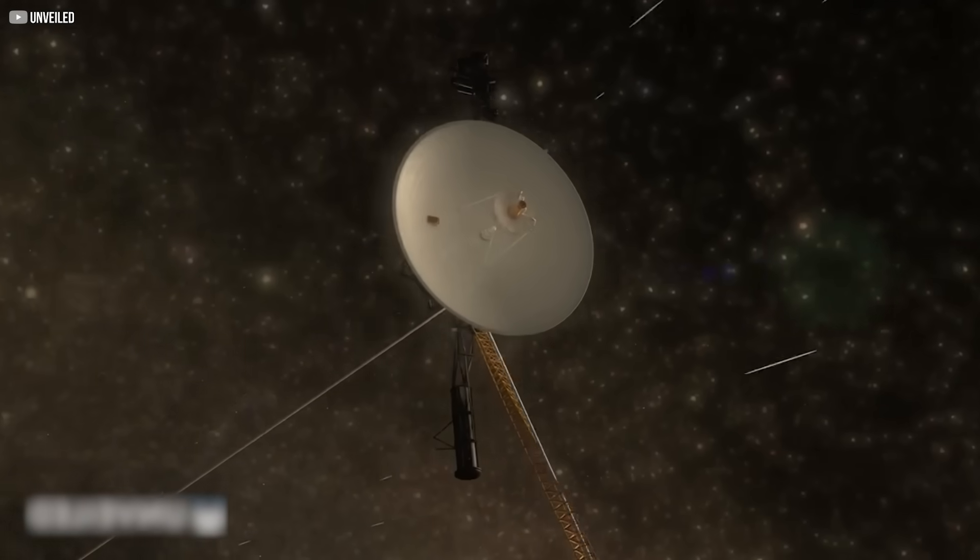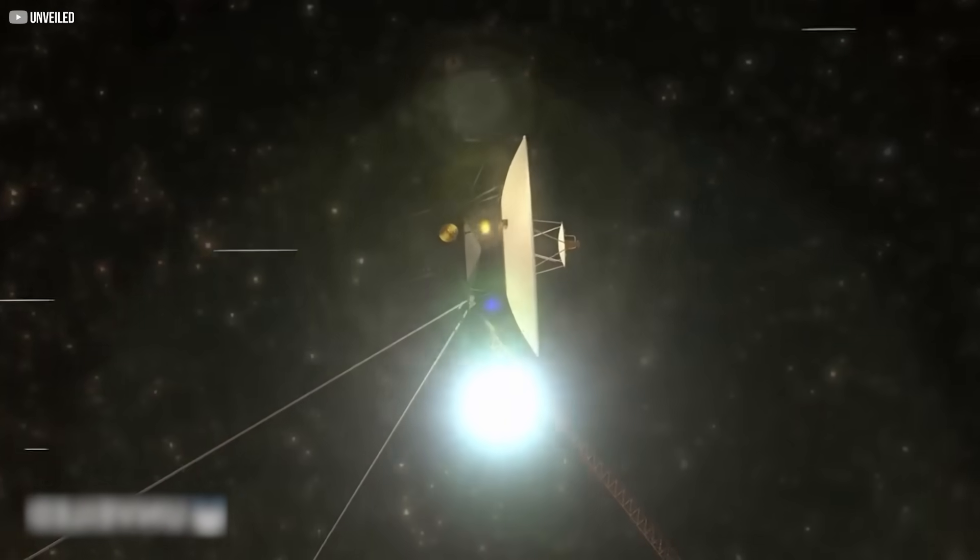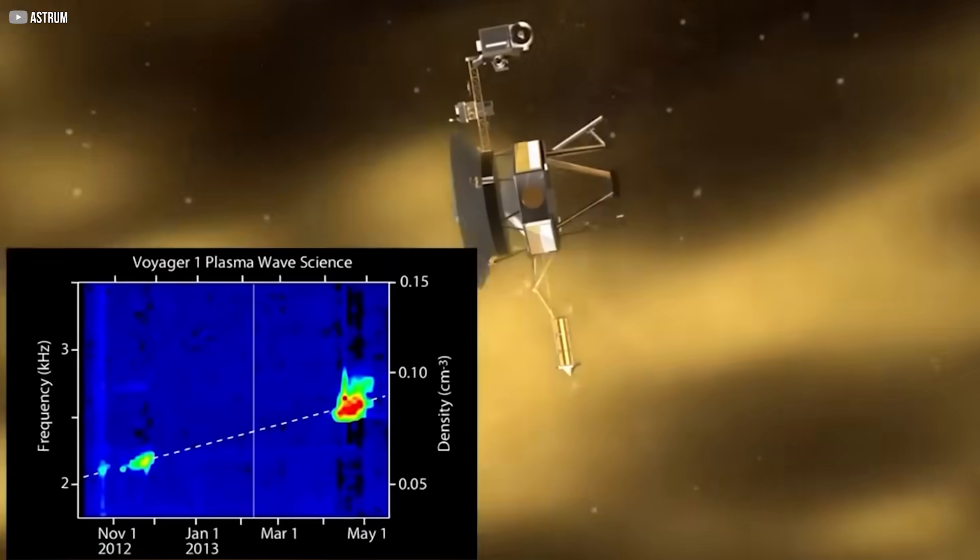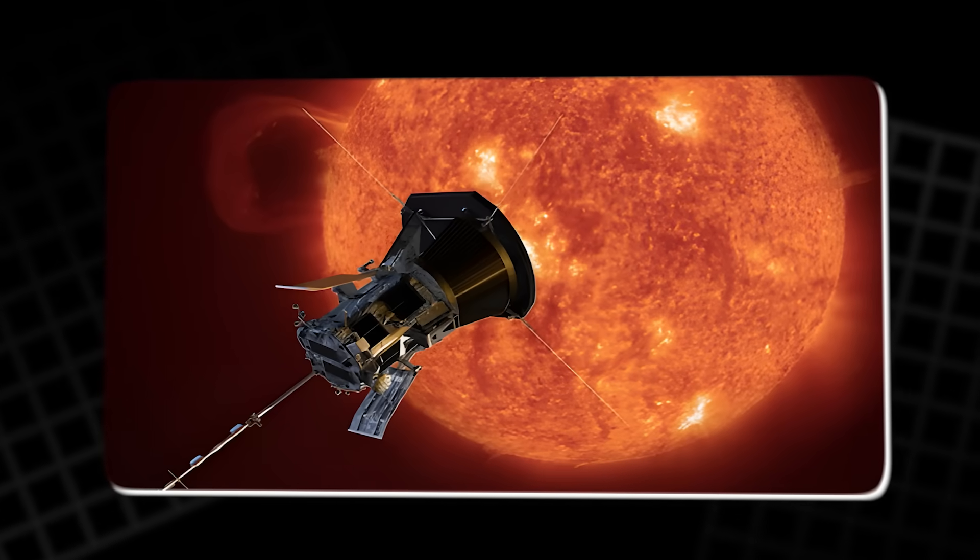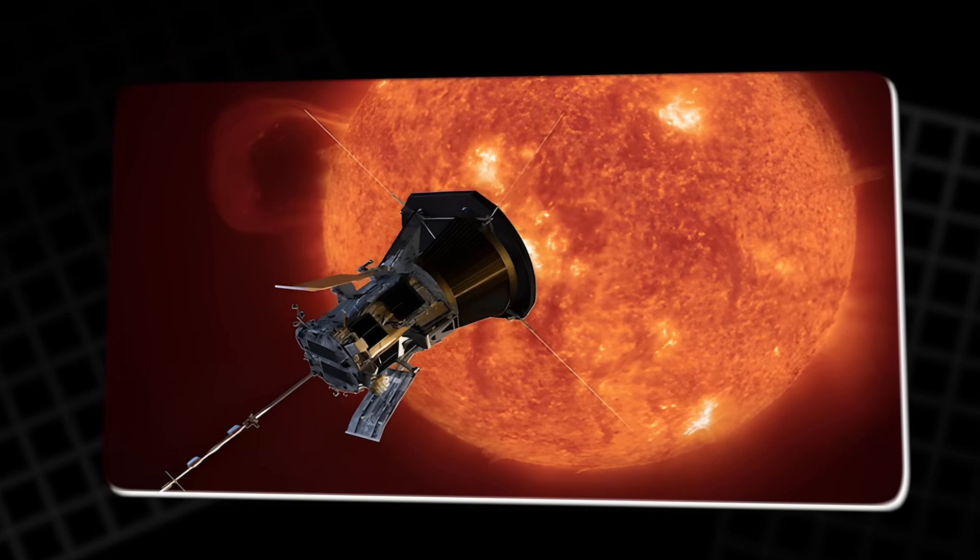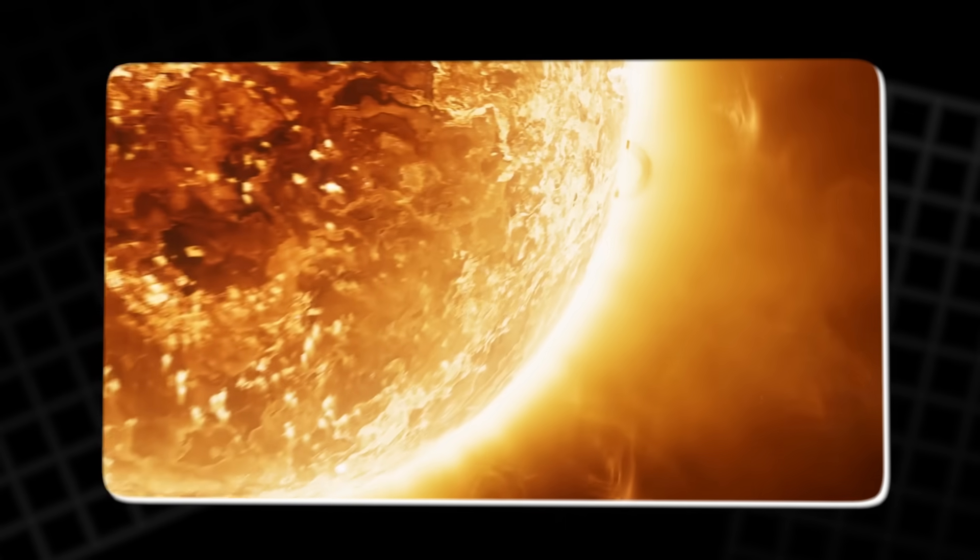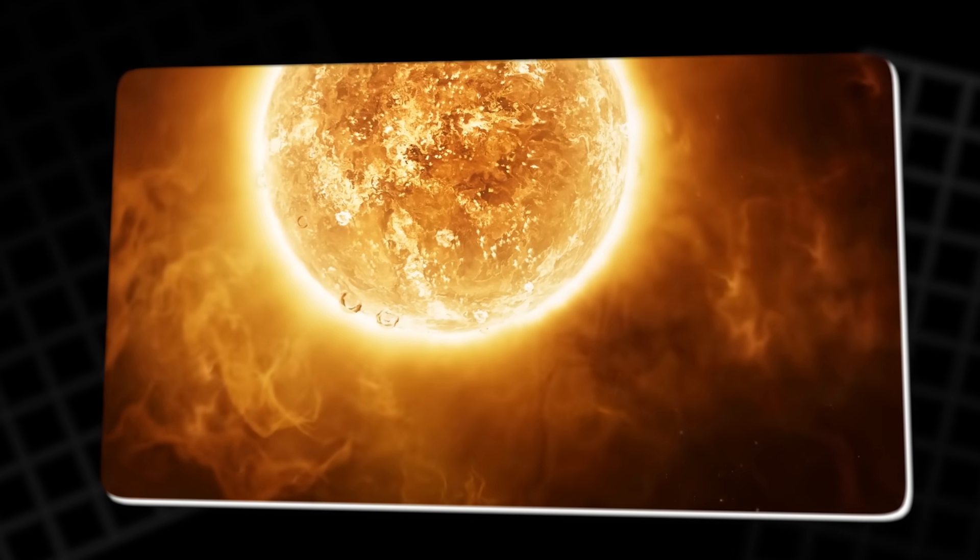As they crossed the heliopause, the data they gathered revealed something unexpected, a sudden and dramatic increase in particle temperature. This spike reached a staggering 50,000 Kelvin, far hotter than anything encountered within the familiar bounds of our solar system.